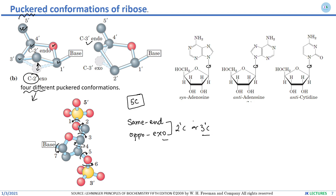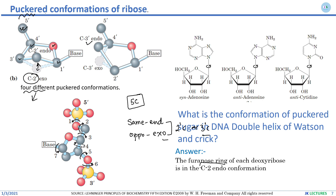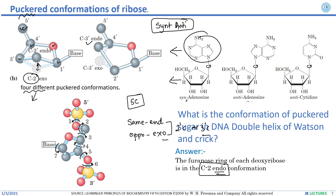The question is: what is the conformation of the puckered sugar in the Watson and Crick DNA double helix? There are four options — 2'-endo, 2'-exo, 3'-endo, and 3'-exo. The answer is the 2'-endo conformation. Regarding syn and anti positions: if the nitrogenous base is on the same side of the sugar it is syn, and if it is on the opposite side it is anti.